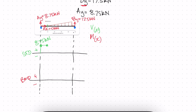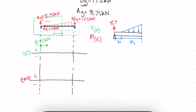Our shear and moment will be functions of x, where x is the distance. We cut the beam and redraw that section to analyze it. We have a pin, a distributed load going down, a distance of one meter, and a variable distance x1. Our reaction is 8.75 kilonewtons. We draw the shear V1 in the negative direction and the moment M1 in the positive direction.